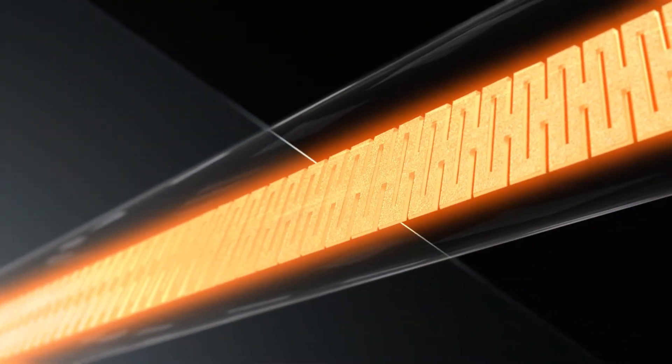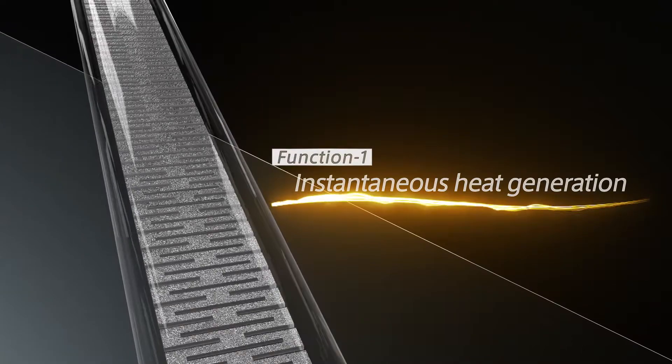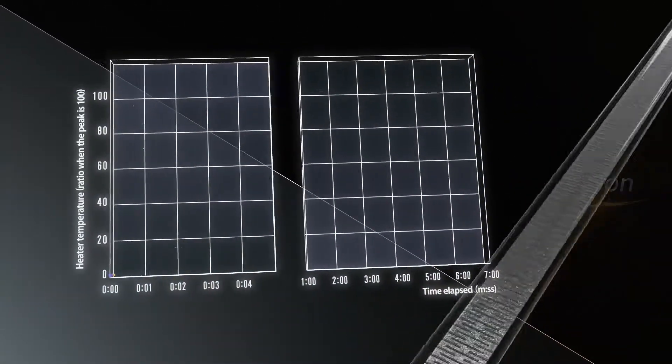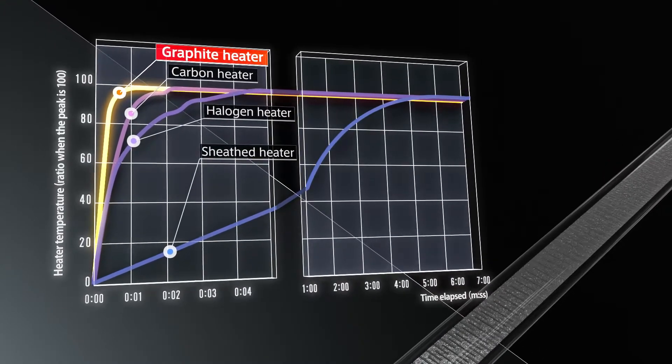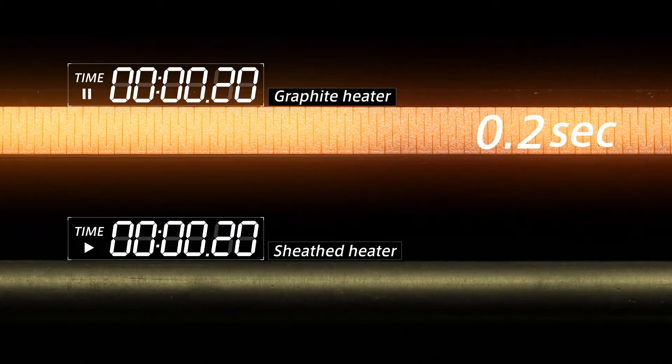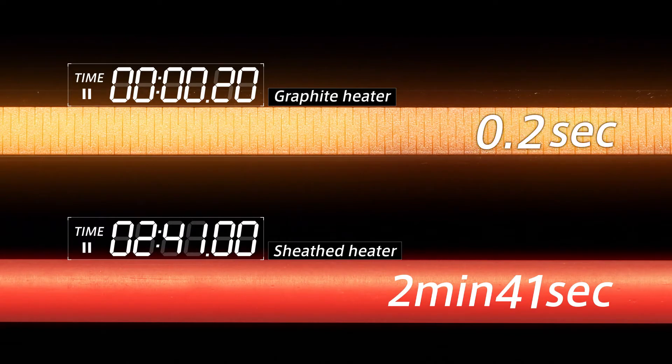Far-infrared graphite has many unique functions. Function 1: Instantaneous heat generation. Graphite heaters start up quickly, generating heat in just 0.2 seconds. The difference in comparison to a sheathed heater is striking.